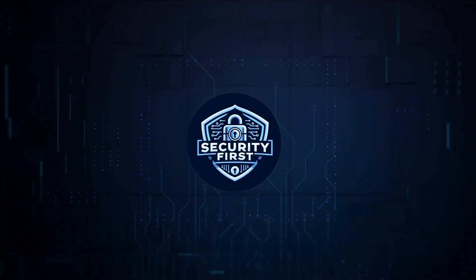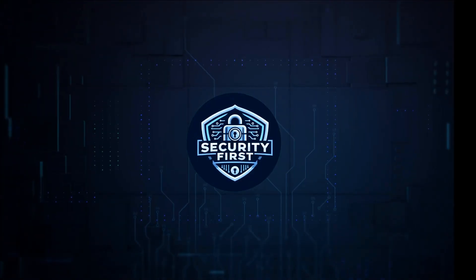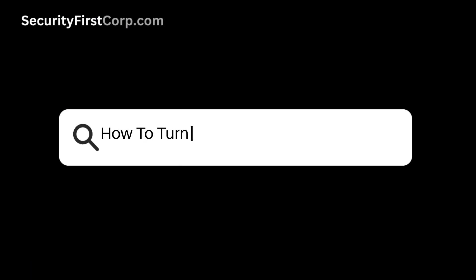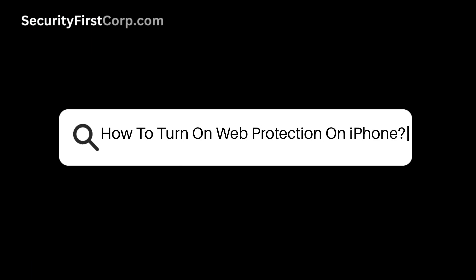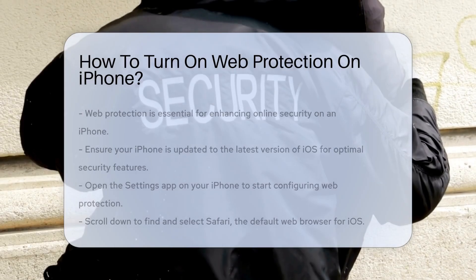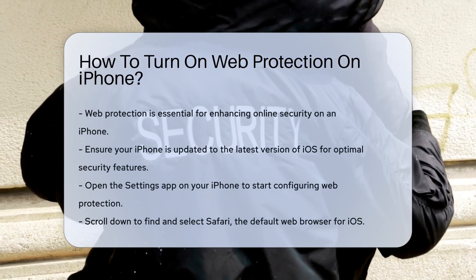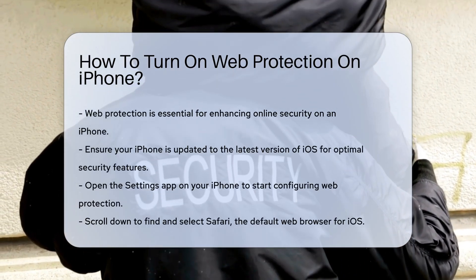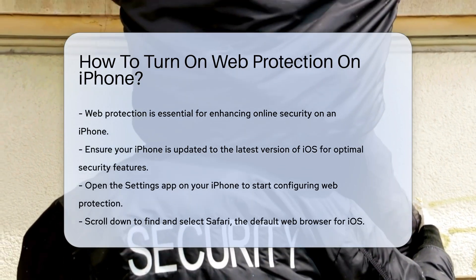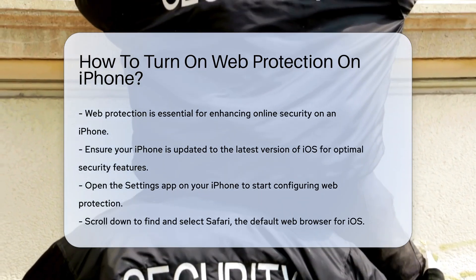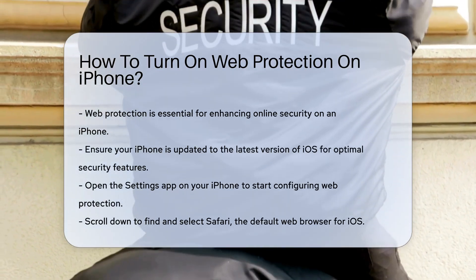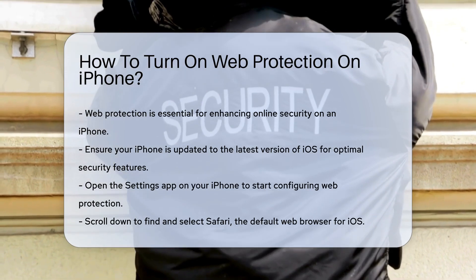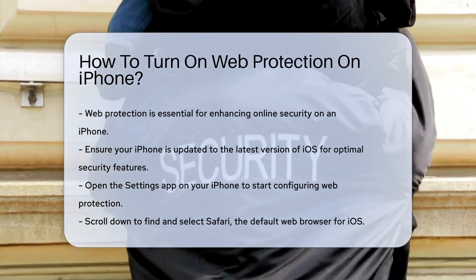Security First Corp. Safety through knowledge. How to turn on web protection on iPhone? Web protection is a critical feature that enhances your online security while using an iPhone. To begin, ensure your device is updated to the latest version of iOS. This ensures you have the latest security features.